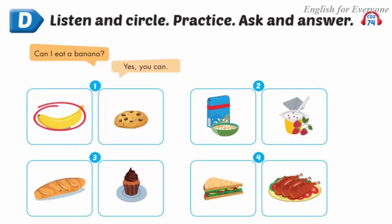D: Listen and circle. Practice: ask and answer. Look at the pictures and listen. There is one example. One: Mom, can I eat a banana? Yes, you can. Can you see the circle? This is an example. Now listen and circle.